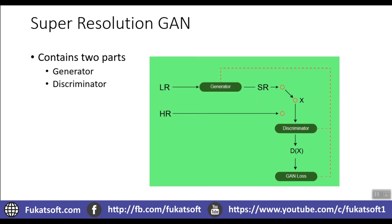Here we can see that we have paired images: each low resolution image corresponds to a high resolution image. We give the low resolution image to a generator as input, and it generates a high resolution or super-resolution image. The super-resolution image and the actual high resolution ground truth image are passed to the discriminator, which learns which one is a fake image and which one is a real image. In this way we compute our loss and use it to optimize our generator network.